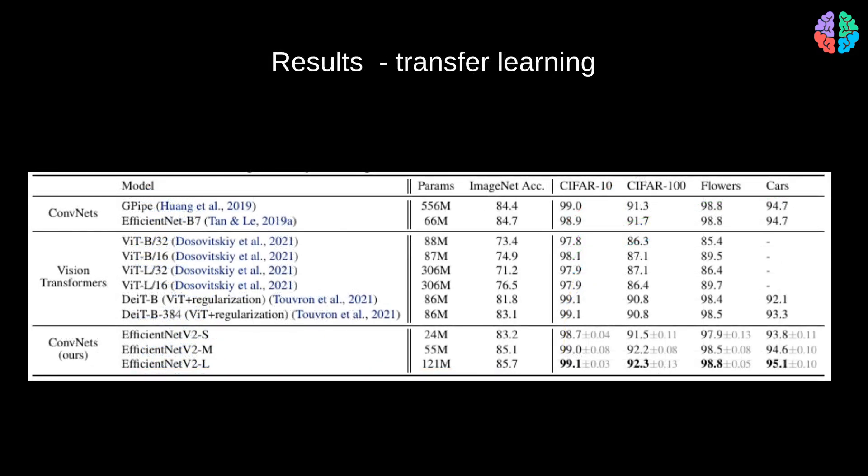To show that the model works on other datasets too, they transfer learn the model on CIFAR, Oxford Flowers, CARS dataset. On each of these datasets, we can notice state-of-the-art performance of EfficientNet v2.